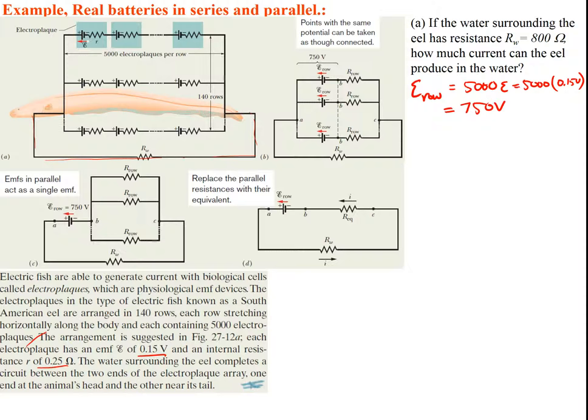Now we want the resistance in each row. Since the electroplacts are in series, the row resistance is simply 5,000 times each individual resistance: 5,000 times 0.25 ohms = 1,250 ohms per row.